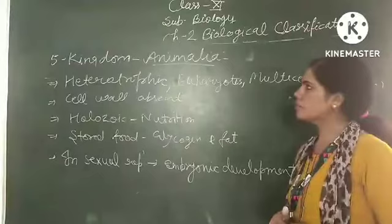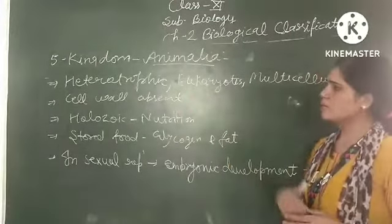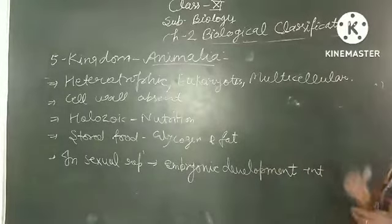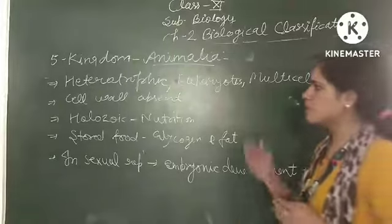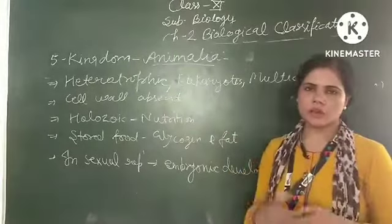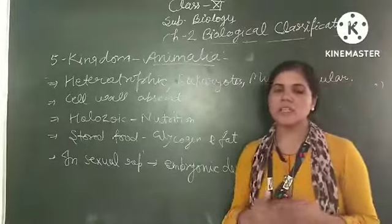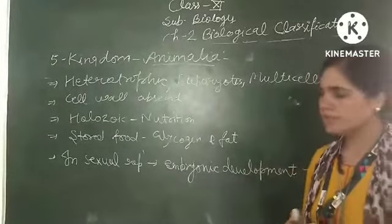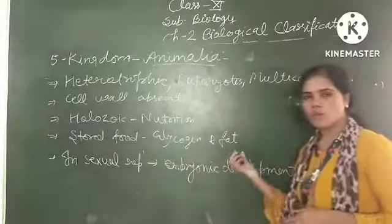So this is our fifth kingdom, kingdom Animalia. General features of this kingdom: these are heterotrophic in nature, eukaryotic and multicellular organisms. They depend on other animals for their food requirements. Cell wall is absent in these organisms. Nutrition is of holozoic type, it means that the digestion will occur inside their body. They store food in the form of glycogen or fat.